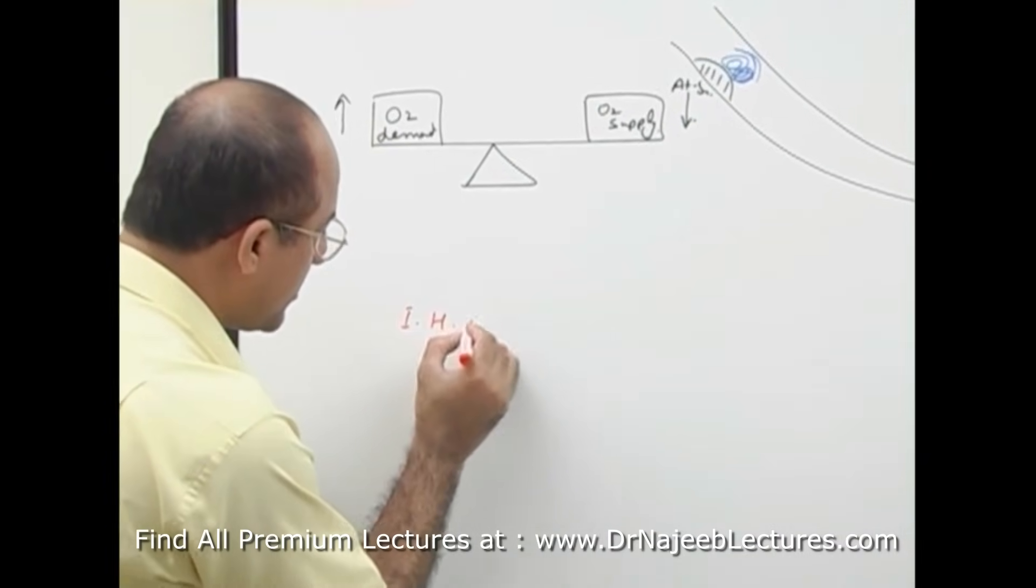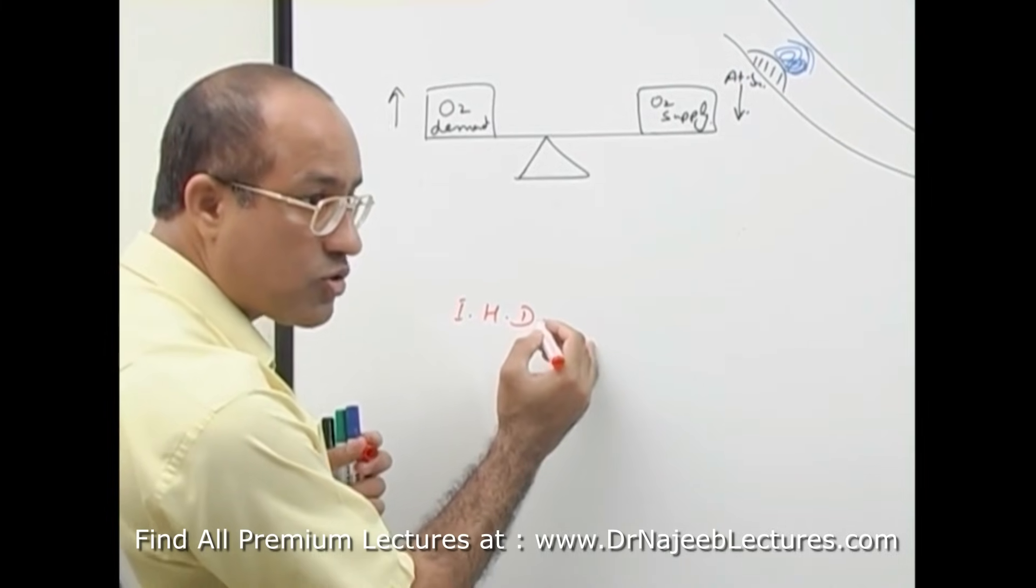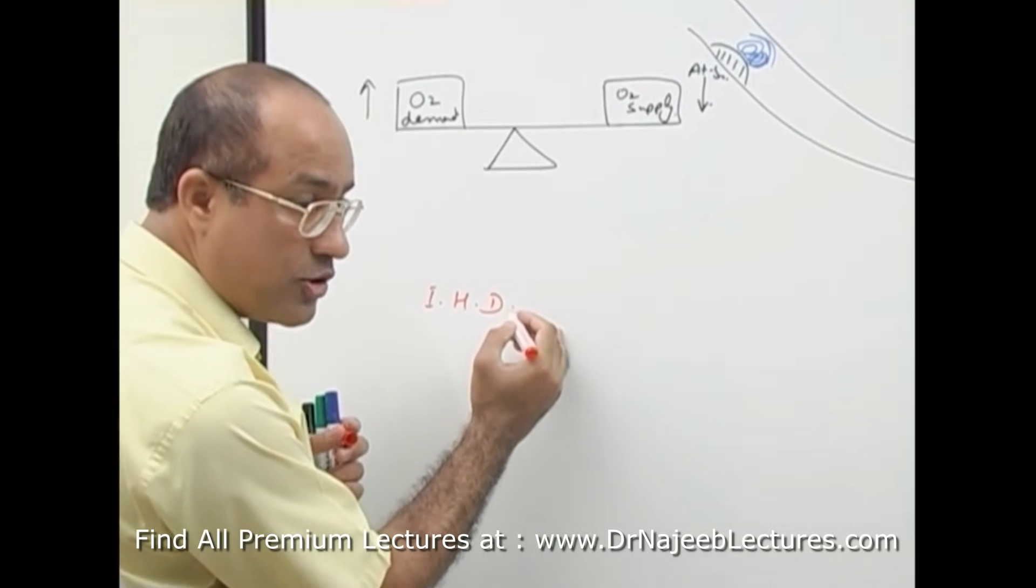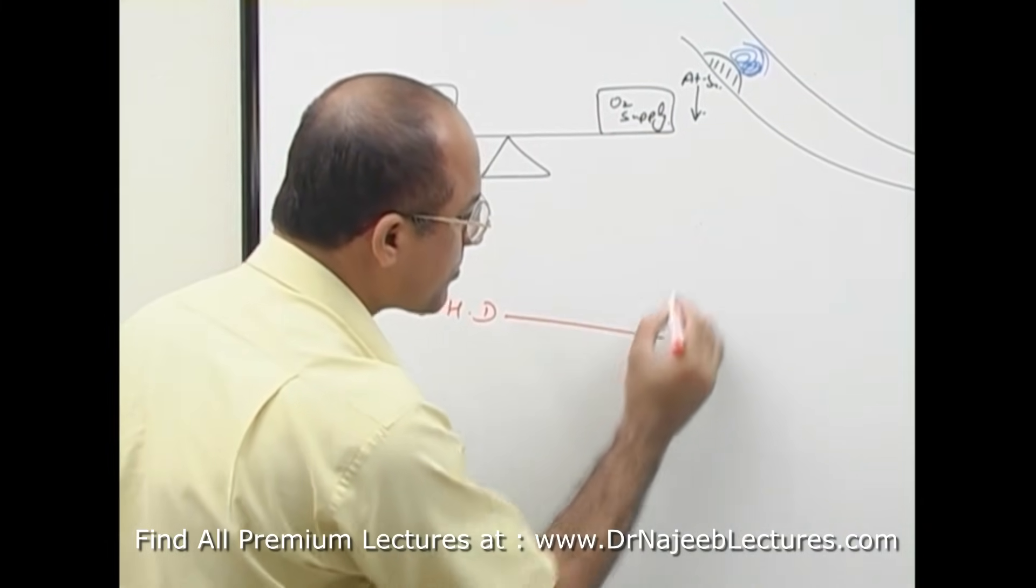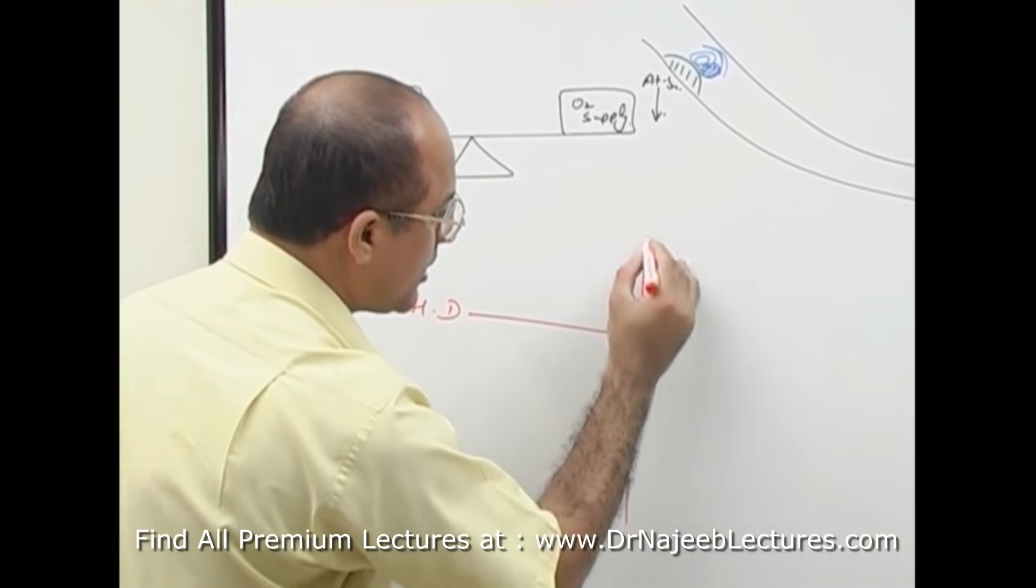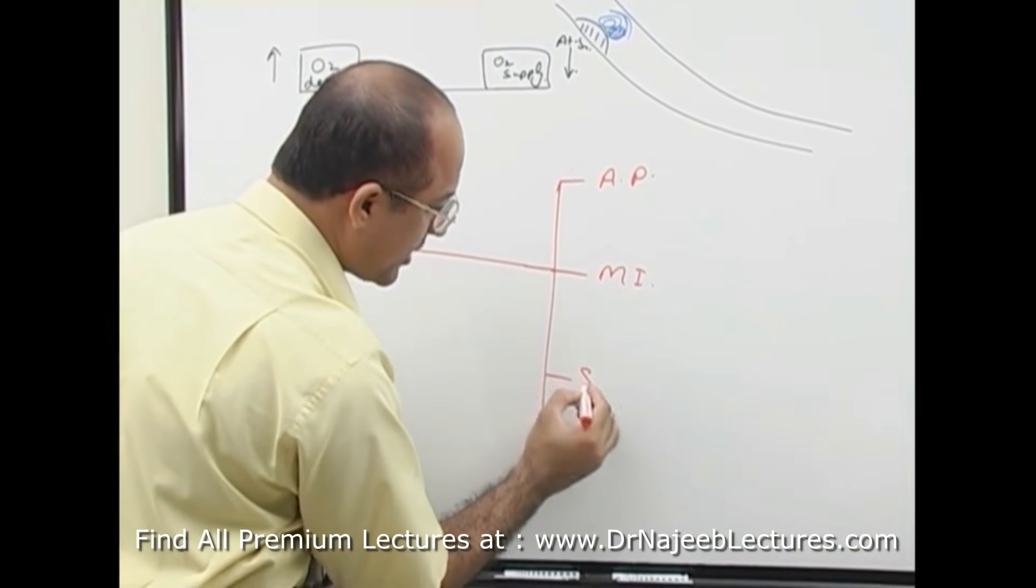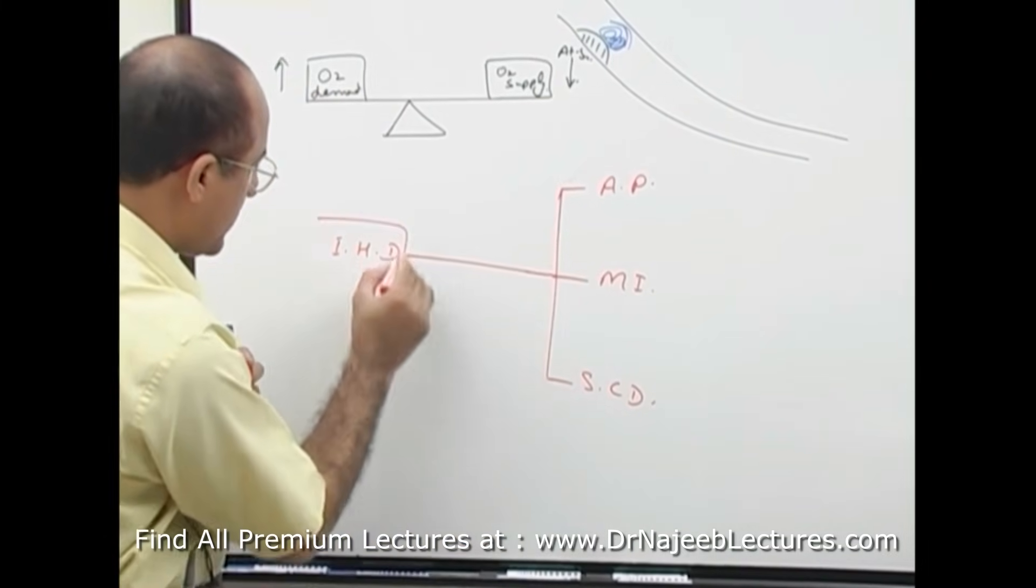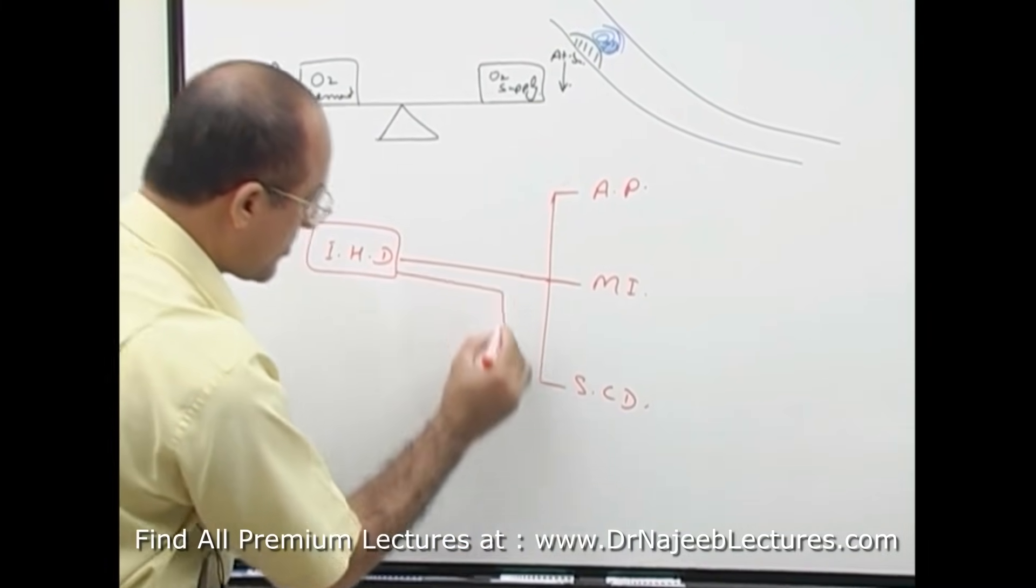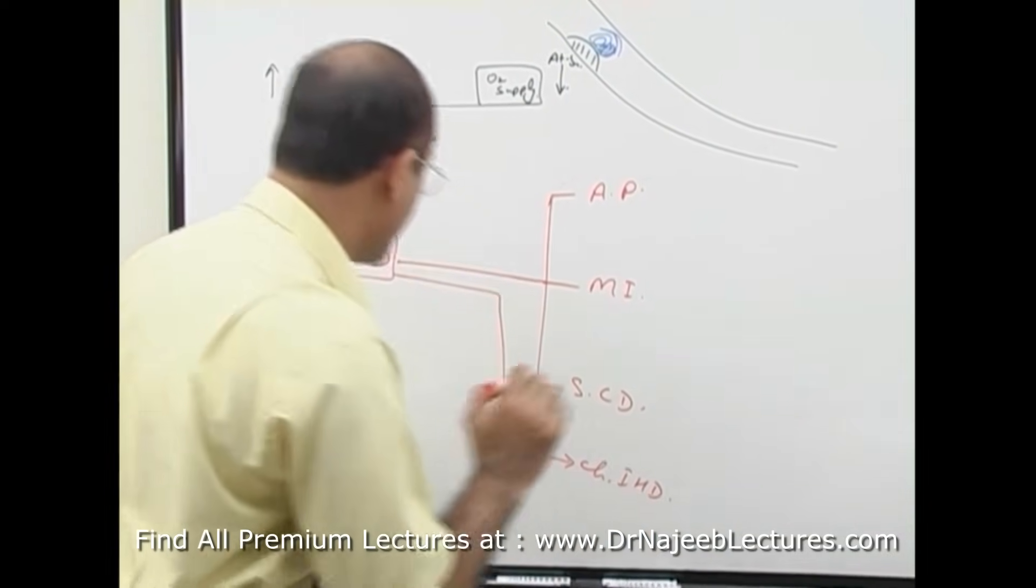Now ischemic heart disease has different clinical situations depending upon the severity and duration of ischemia. For example, angina pectoris, myocardial infarction, sudden cardiac death, and chronic ischemic heart disease.